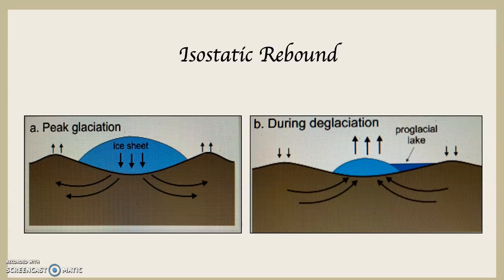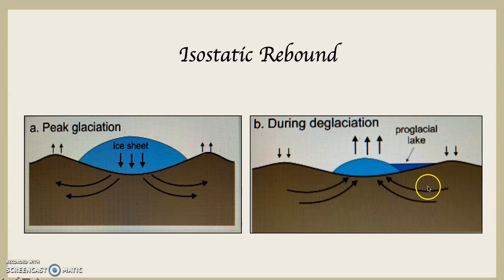Isostatic rebound — isostasy means the flexibility of the crust. If you look at the diagram on the left-hand side, at peak glaciation the arrows indicate that the land is being depressed, because the land is flexible. Imagine just how much 10,000 feet of glacial ice must weigh — if you have it there for 2 million years, it's going to depress the land. But as glaciation began to recede, the weight was lifted off, and now the arrows point upwards because the land itself is bowing back upward. That's what isostatic rebound is: the rising of the land due to a lessening of weight from receding glaciers.